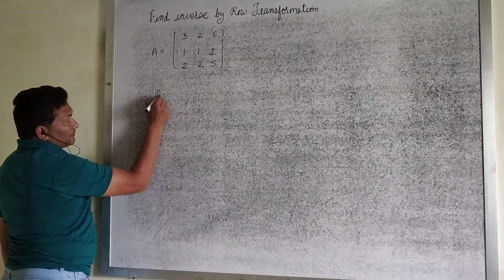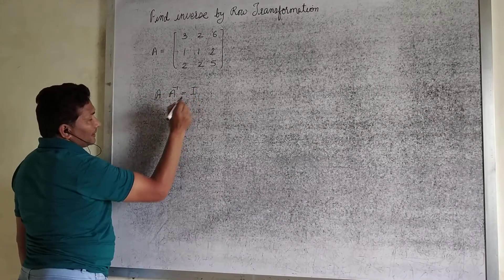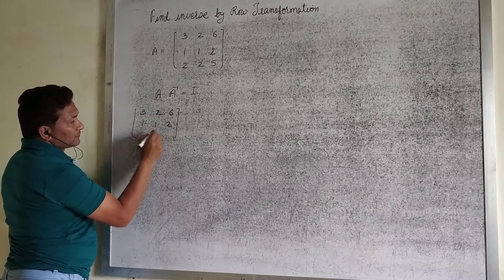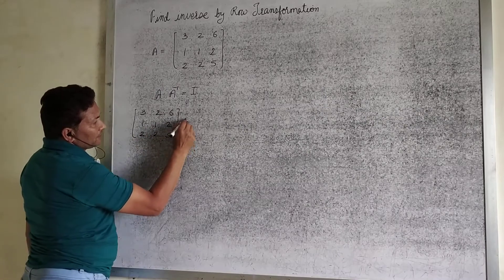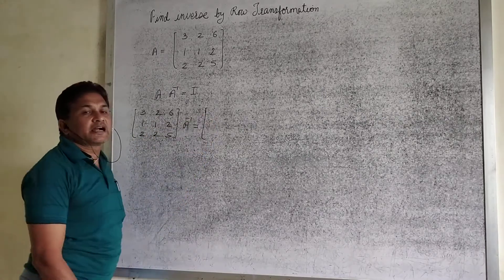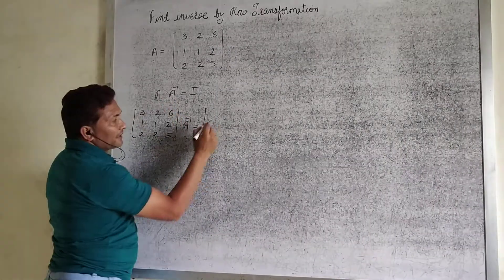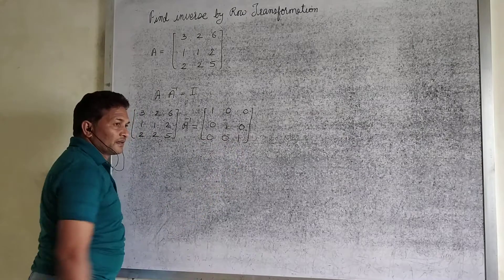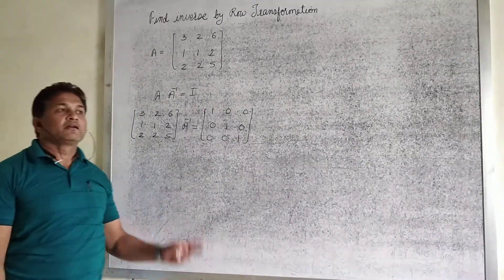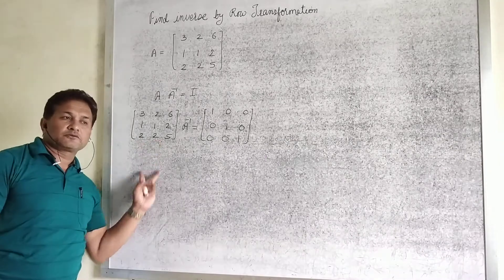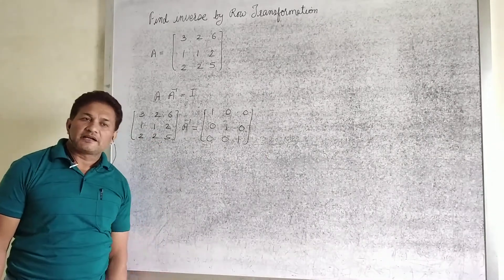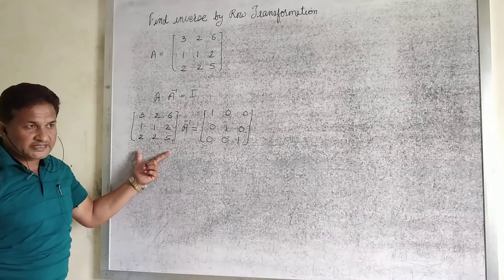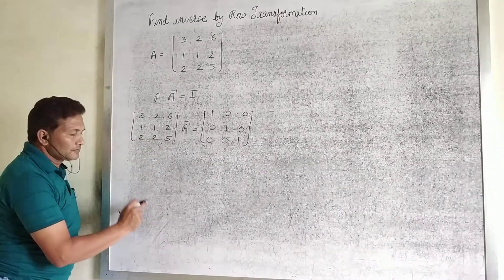By definition, we know that A into A-inverse is equal to I, the identity matrix. We put the value of A as 3, 2, 6 / 1, 1, 2 / 2, 3, 5, multiplied by A-inverse, which equals I — the identity matrix of the same order as A, with values 1, 0, 0 / 0, 1, 0 / 0, 0, 1. Now, by row transformation, we have to convert matrix A into the identity matrix by following the elementary transformations.